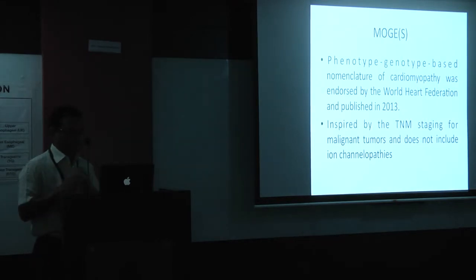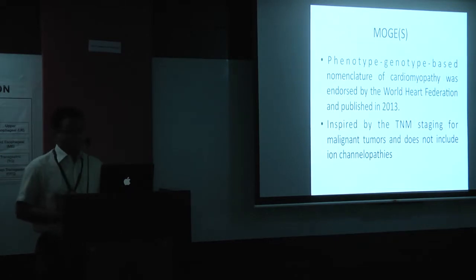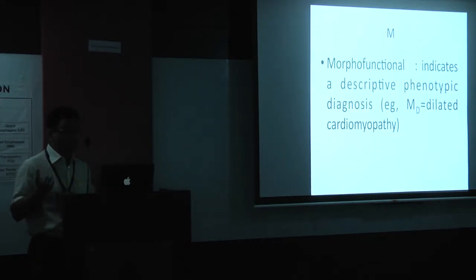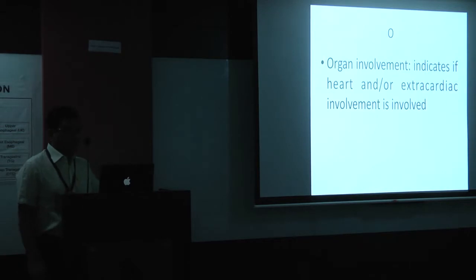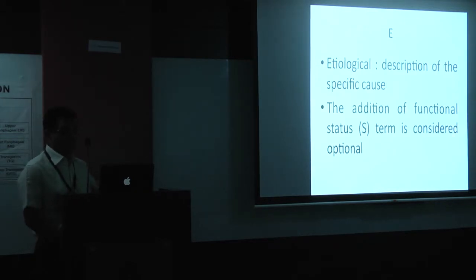Then there was the MOGE-S classification — a phenotype-genotype based nomenclature for cardiomyopathy, endorsed by the World Heart Federation and published in 2013. This was like TNM staging for cancers, used for prognostic staging. M is morpho-functional (descriptive phenotypic diagnosis — dilated etc.), O for extracardiac organ involvement, G for genetic or familial inheritance, E for etiological description of specific cause, and S for functional status.